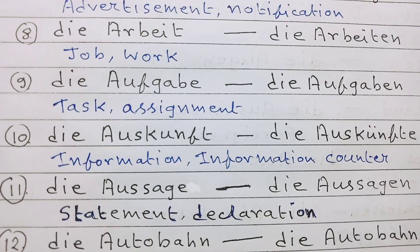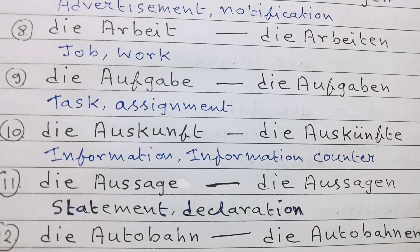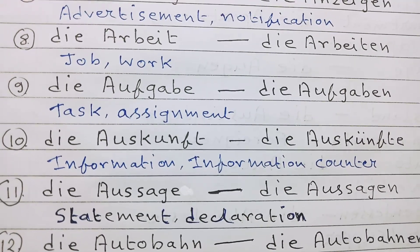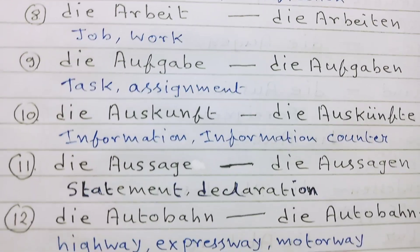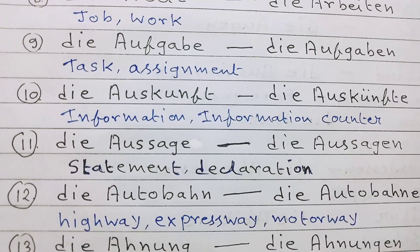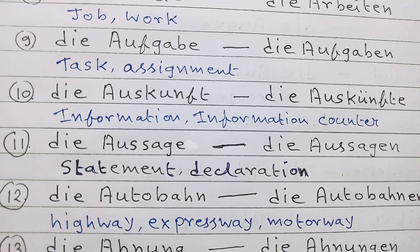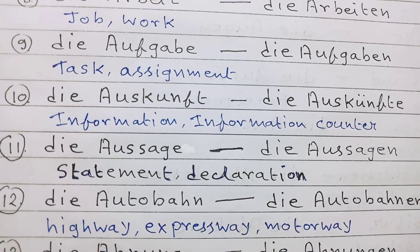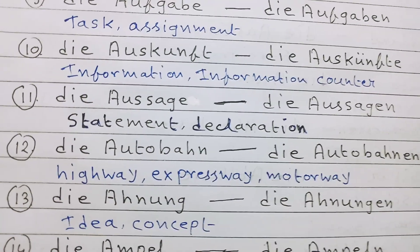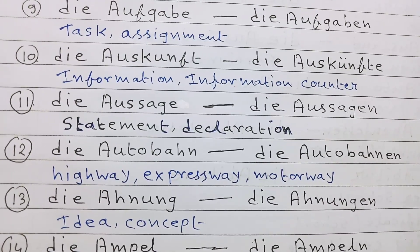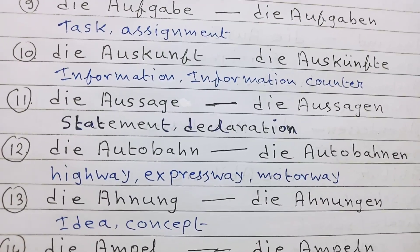Number 10: die Auskunft, die Auskünfte — information, information counter. Number 11: die Aussage, die Aussagen — statement, declaration. Number 12: die Autobahn, die Autobahnen — highway, expressway, motorway.